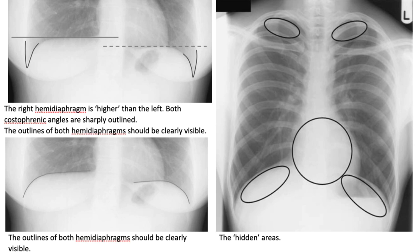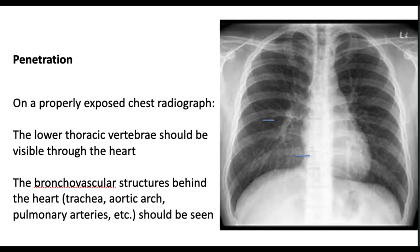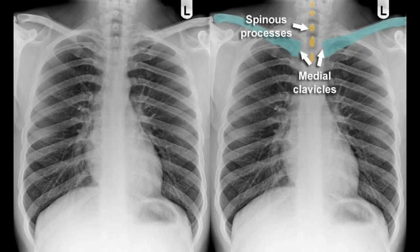Assess penetration by evaluating the overall density of the lung fields and the visibility of the vertebral bodies — adequate penetration allows for clear visualization of both lung parenchyma and bony structures. Check for rotation by assessing symmetry between the left and right lung fields, the sternoclavicular joints, and the spinous processes of the vertebrae. Any visible asymmetry may indicate rotation.